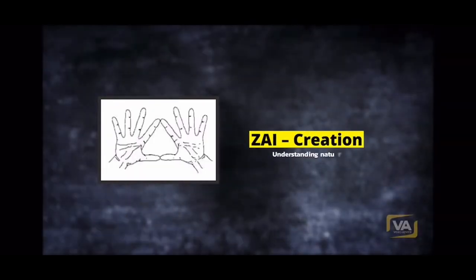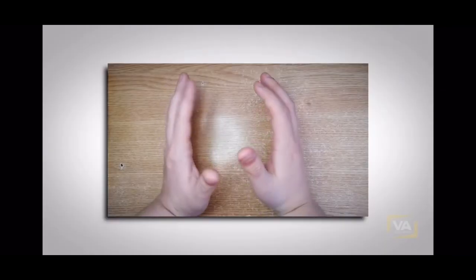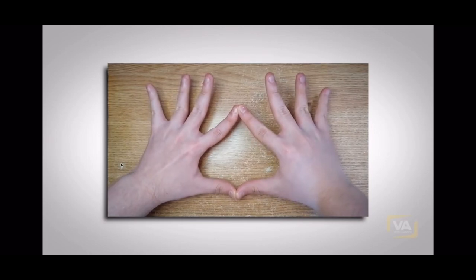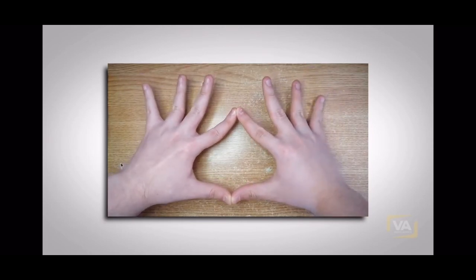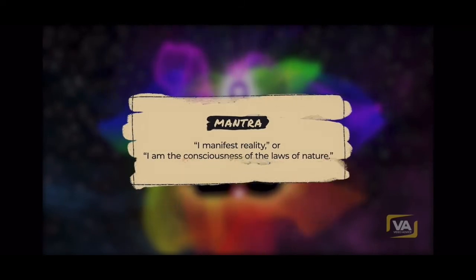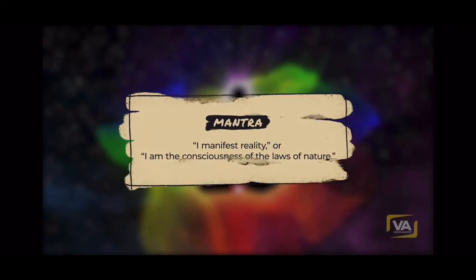Zai. Creation. Understanding nature. The Zai Kuji has no corresponding gland or chakra. The visualization is a large stream of light radiating from the lower chakras and extending upward. Mantra: I manifest reality.